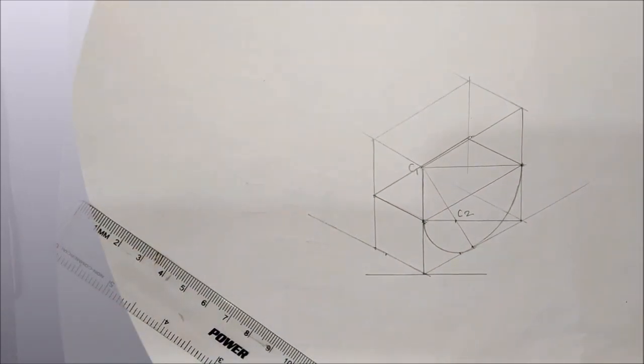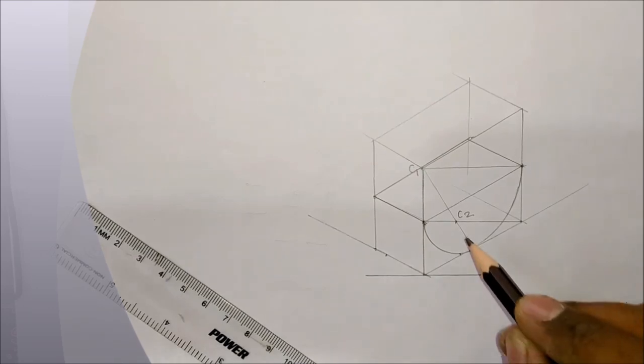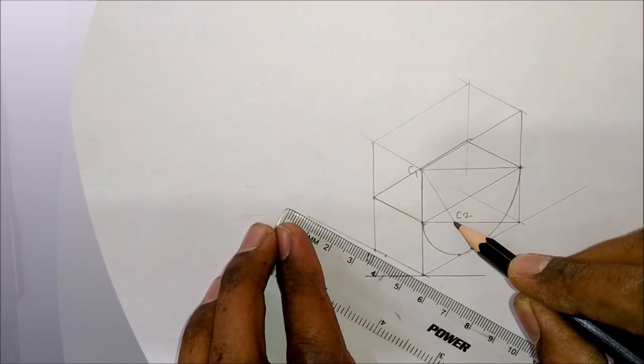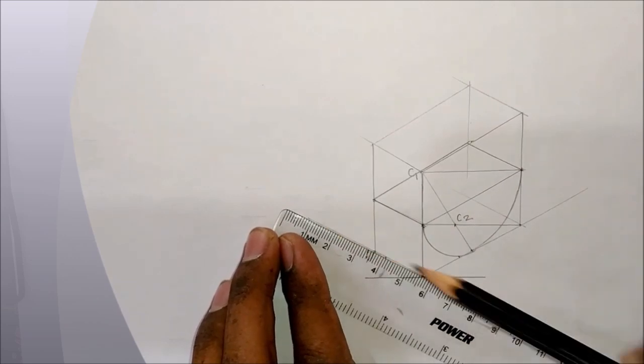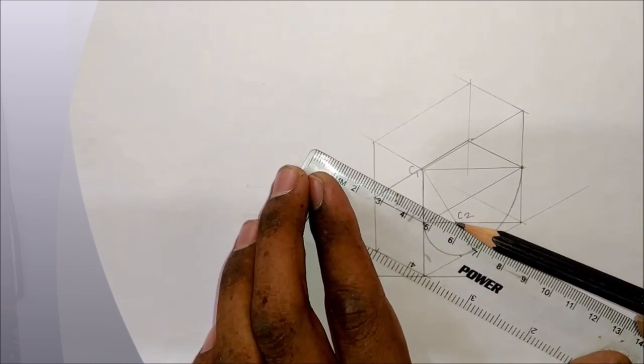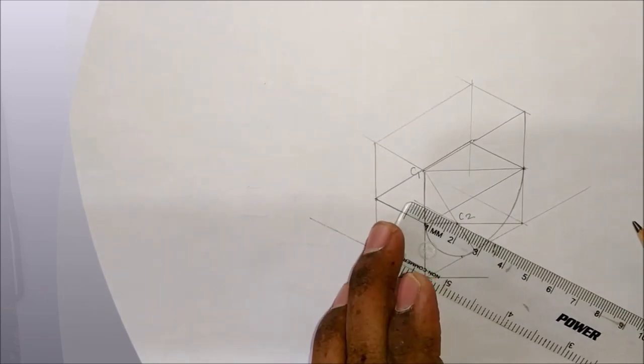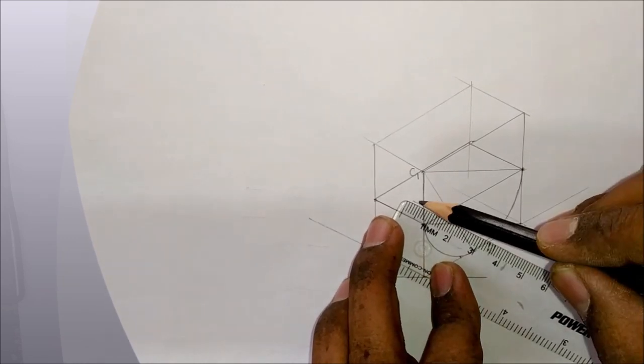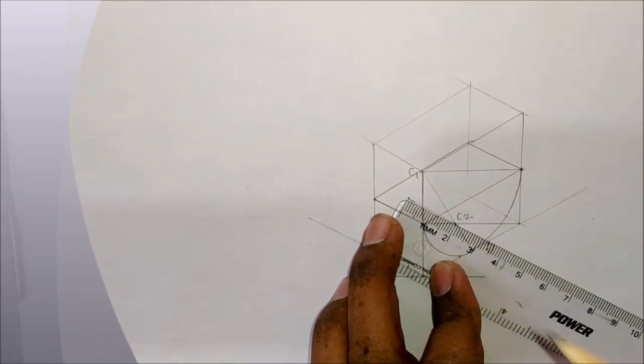This is the front portion of that isosemicircle. Now we have to show this curve again at 20mm backside distance. So we will shift the center C2 to 20mm backside. We will measure the 20mm distance. So now center is shifted 20mm backside.